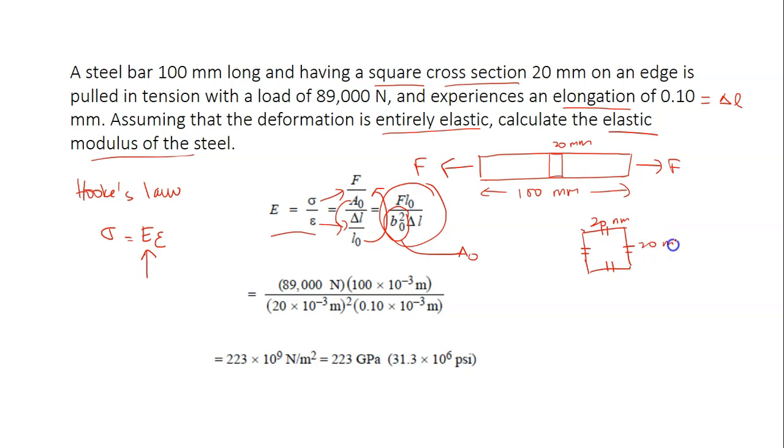So if this is 20 mm, this is also 20 mm. So the cross sectional area of this square is 20 times 20. This is mm. And then delta L. Delta L is here.